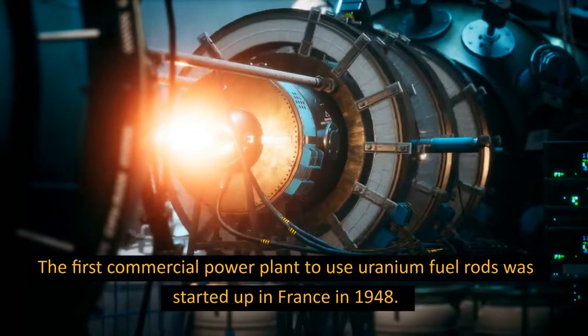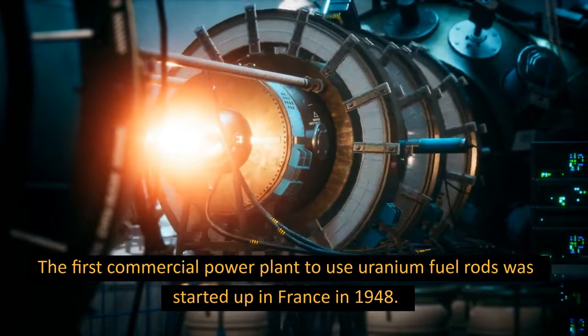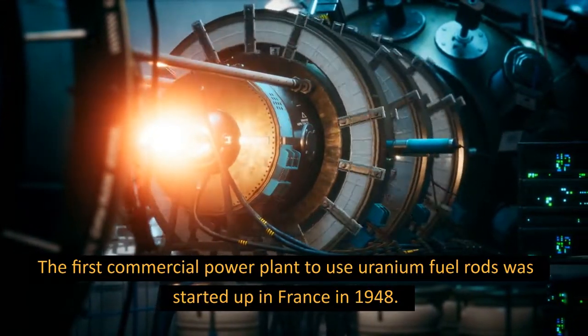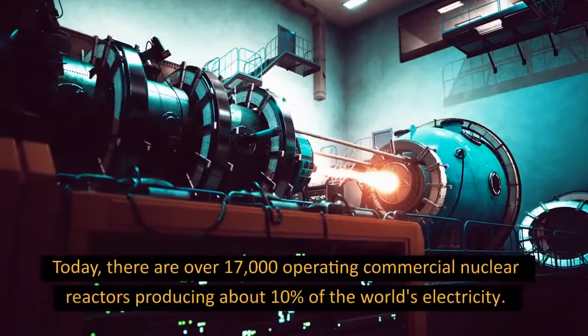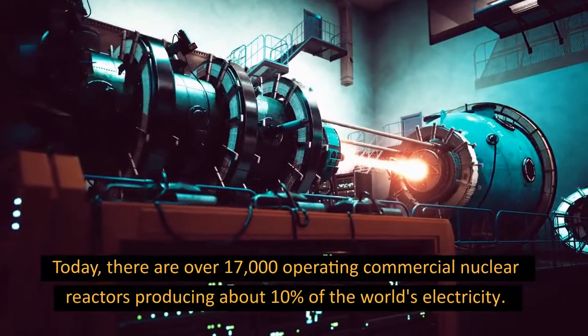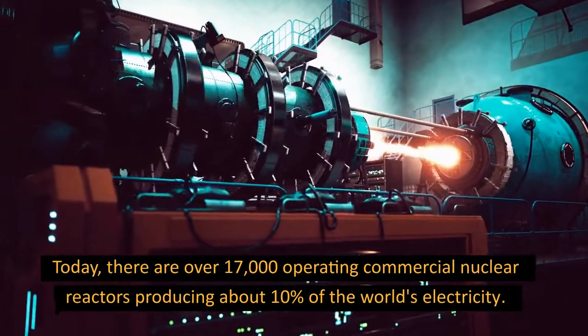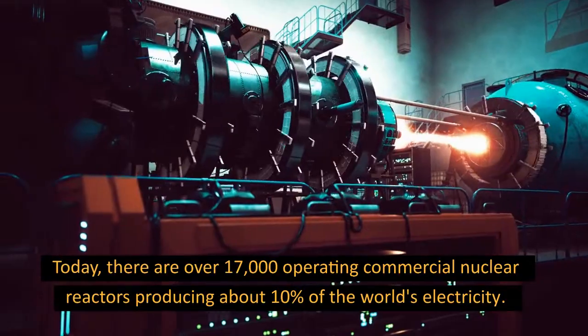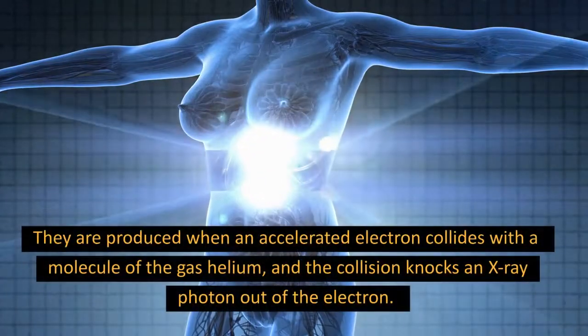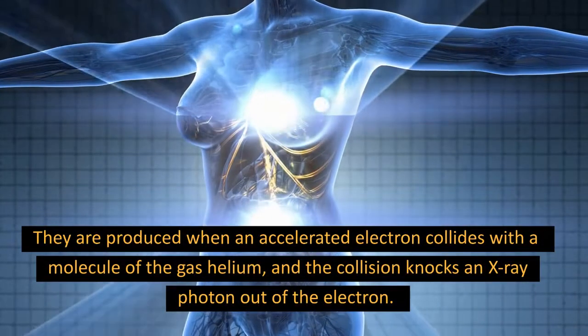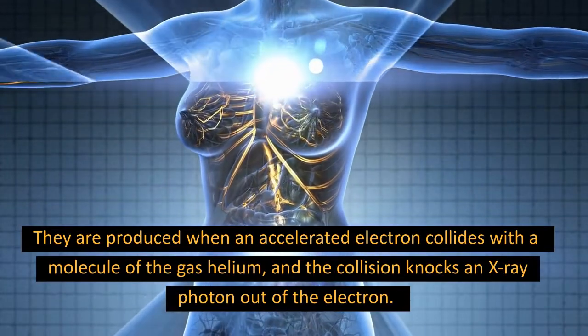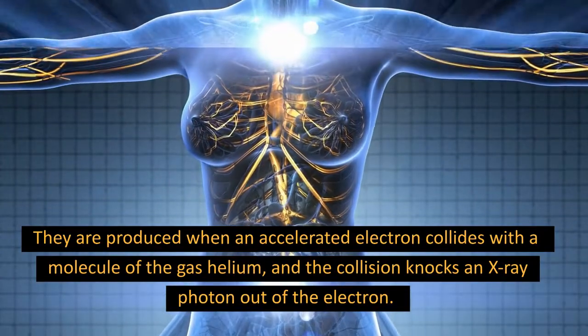The first commercial power plant to use uranium fuel rods was started up in France in 1948. Today, there are over 17,000 operating commercial nuclear reactors producing about 10% of the world's electricity. They are produced when an accelerated electron collides with a molecule of a gas helium, and the collision knocks an X-ray photon out of the electron.